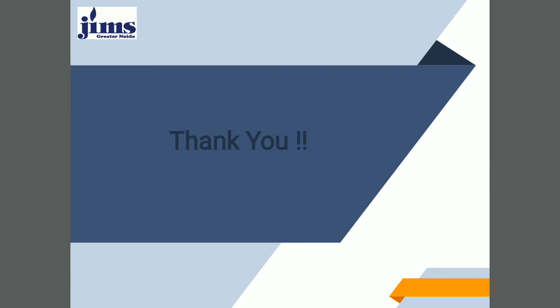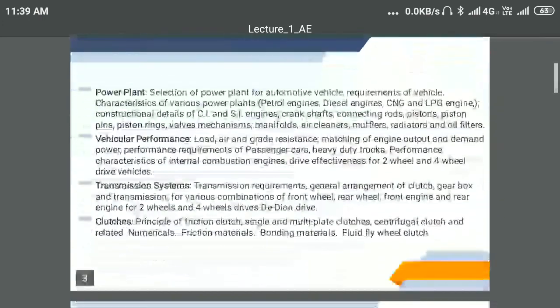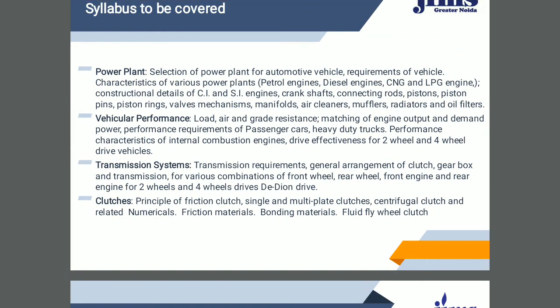As per our syllabus, the second lecture covers the construction of the CI engine. As you see in the first slide, in the second lecture we have covered the construction of the CI and SI engines — crankshaft, connecting rod, piston, cylinders, valve mechanism, manifolds, air cleaners, mufflers, radiators, and oil filters. This is basically the construction of an IC engine, because these are the main components of an internal combustion engine, in which we have to study CI as well as SI engines.